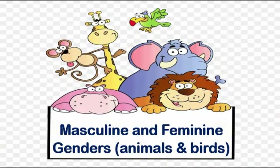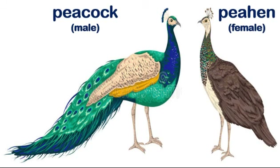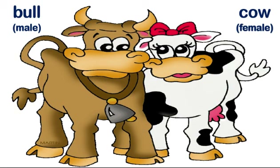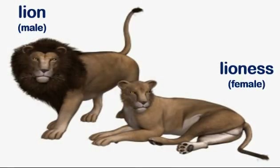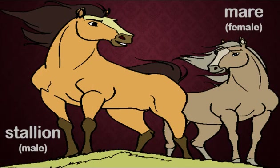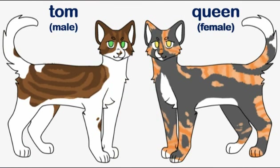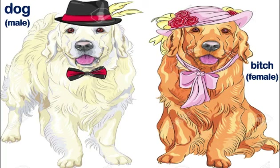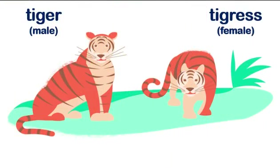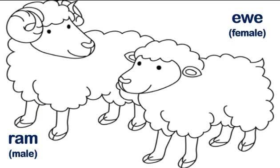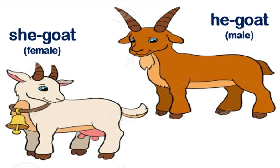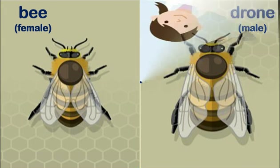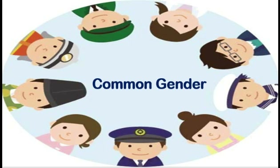Here come masculine and feminine genders of animals and birds: peacock/peahen, bull/cow, lion/lioness, fox/vixen, stallion/mare, tom/queen, buck/doe, gander/goose, dog/bitch, tiger/tigress, cock/hen, boar/sow, ram/ewe, he-goat/she-goat, and drone/bee.